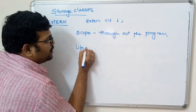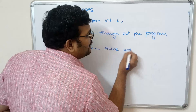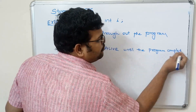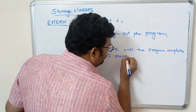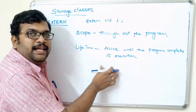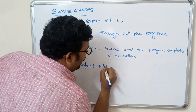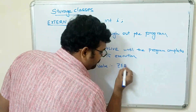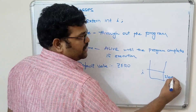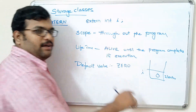The lifetime of an external variable is similar to static: the variable is alive until the program completes its execution, and only then will memory be released. The default value is also similar to static — it is zero. So declaring extern int i allocates two bytes, and the default value is zero since there is no initialization.